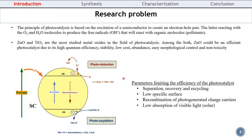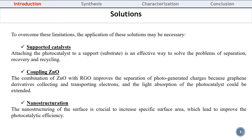The objective of this study is to enhance the photocatalytic activity of ZNO by controlling the parameters limiting its efficiency, such as the separation, recovery, and recycling, the low specific surface area, the recombination of charge, and the low absorption of visible light. To overcome these limitations, we proposed the following solutions: attaching the photocatalyst to a substrate, the combination of ZNO with reduced graphene oxide to improve the separation of charge and extend light absorption, and also the nanostructuring of the surface to increase the specific surface area.